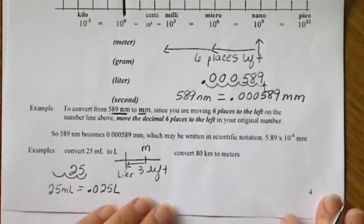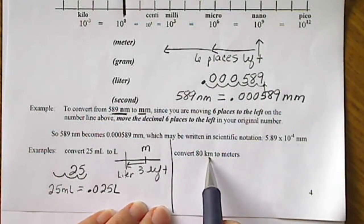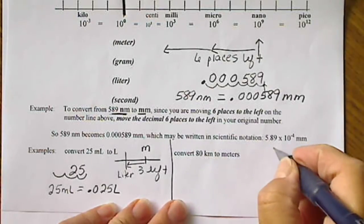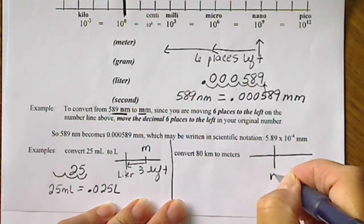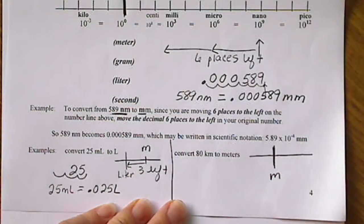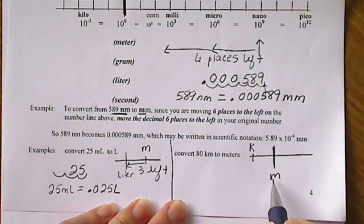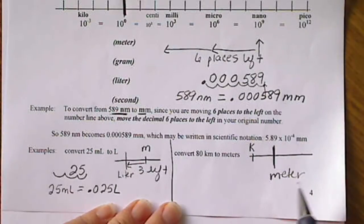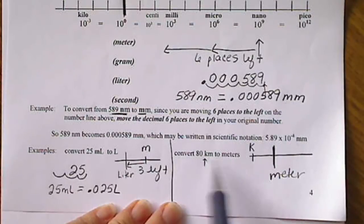One more example here, we could convert 80 kilometers to meters. And again, if we draw our number line, meter is going to be right here at the 0 marking of our number line. Kilo is a prefix three places to the left of meter. So if we move from kilometers to meters, we're going to move in this direction.